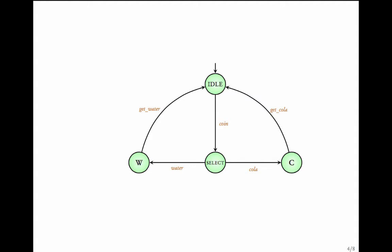Let us recall the transition system which represented the vending machine. The machine is initially in an idle state. When the user inserts a coin, the machine moves into a select state. In the select state, depending on which option is chosen by the user, the vending machine goes into either state w or state c.